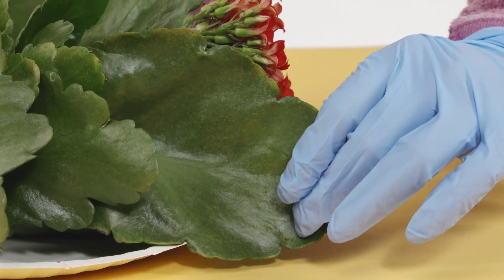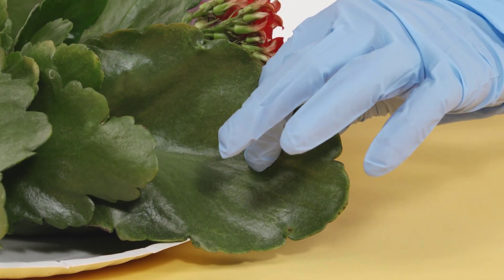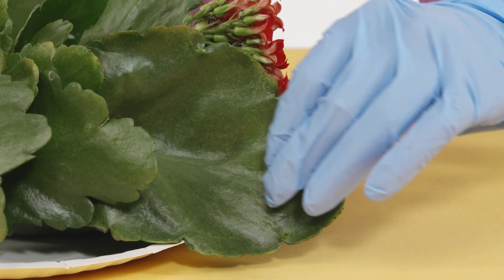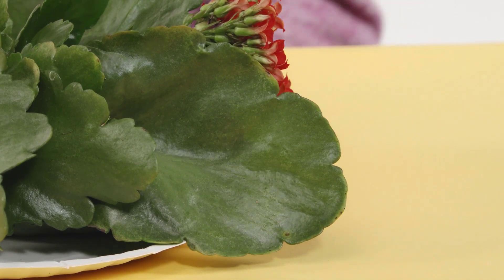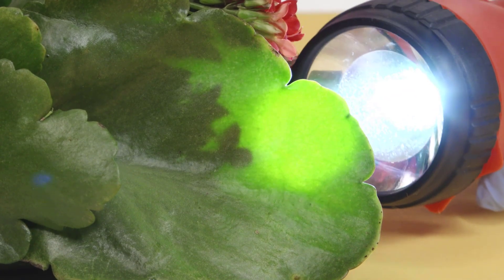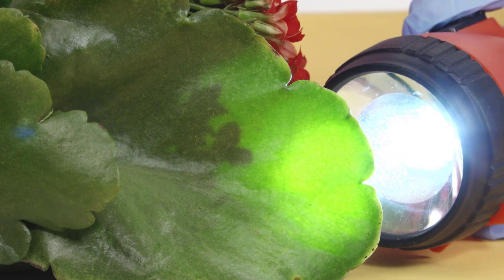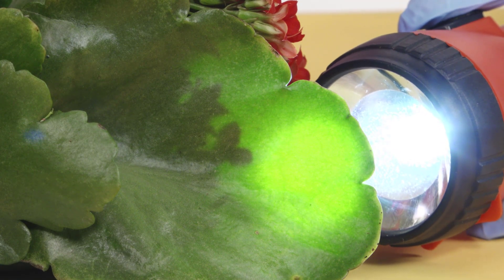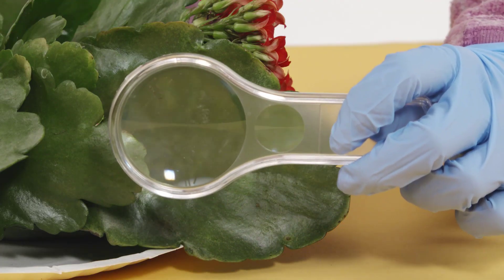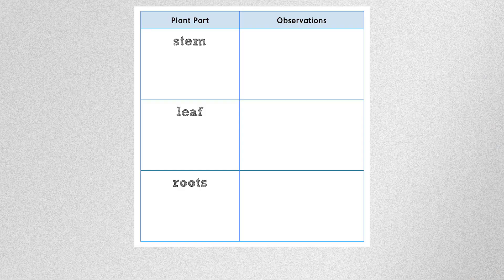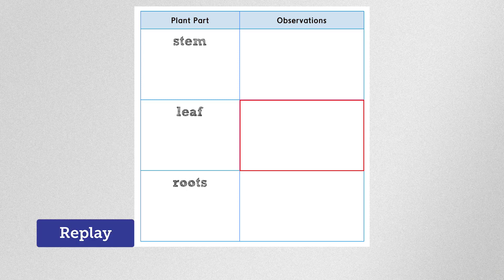What does the leaf feel like? Is it rough or smooth? The leaf feels smooth. When you shine the flashlight on the leaf, does the light go through it? What else do you notice about the leaf? Write your observations of the leaf in the right column of the data table. If you need to see the leaf again, select Replay. When you've finished writing your observations, select Next.